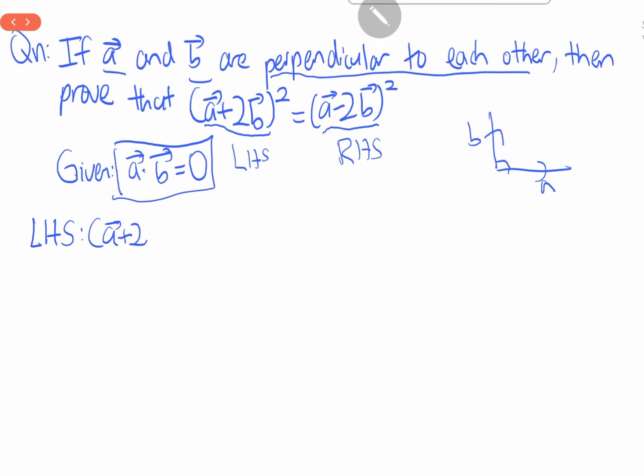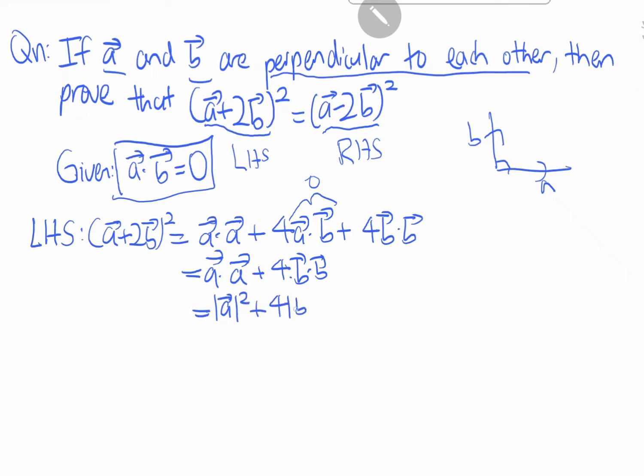A plus 2b square equals to a dot a plus 4ab plus 4b. As you know, this will be 0. Hence we get a dot a plus 4b equals to a square plus 4b square. This will be the magnitude of a and this will be the magnitude of b.